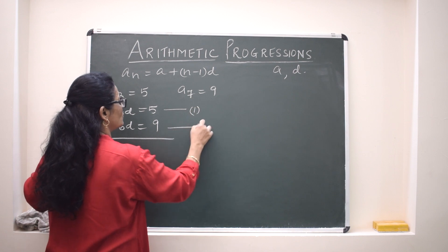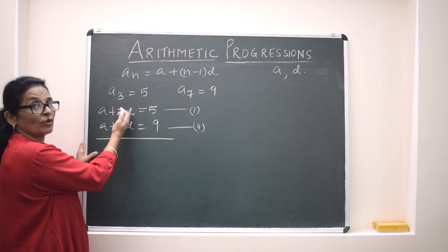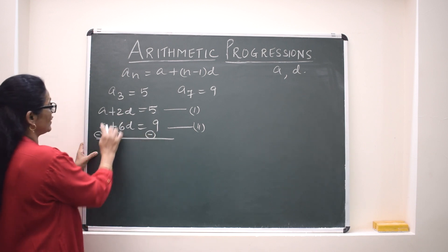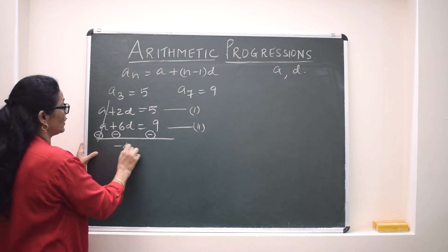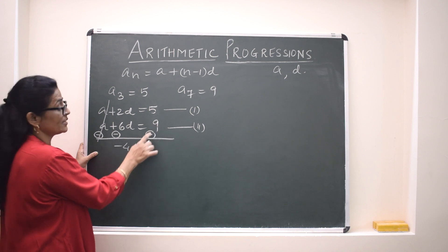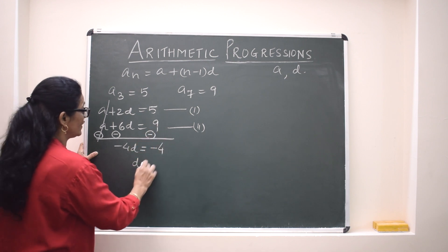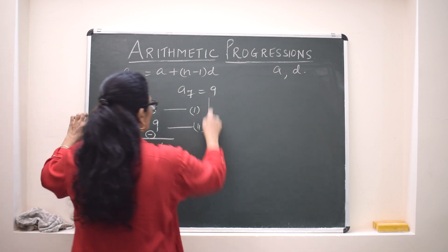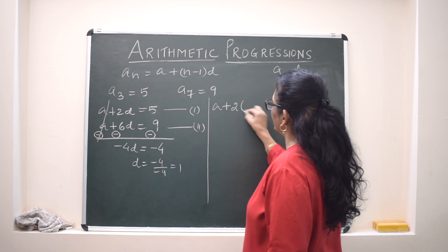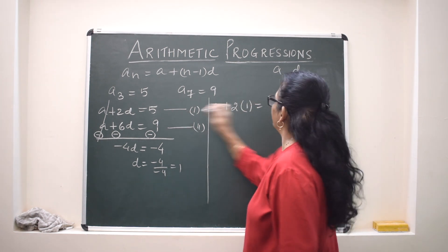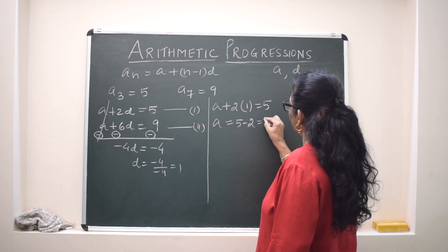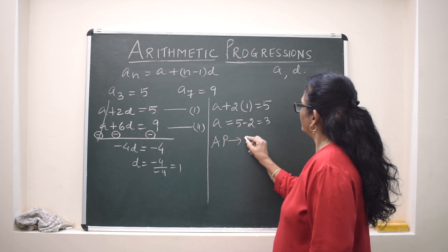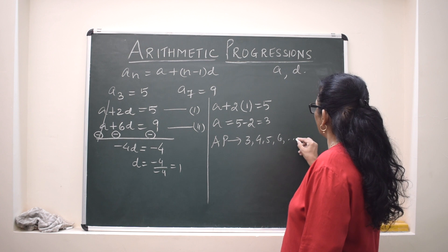Subtracting the second equation from the first: A − A cancels, and 2D − 6D = −4D = 5 − 9 = −4, giving D = 1. Substituting D = 1 into the first equation: A + 2(1) = 5, so A = 3. The AP is therefore 3, 4, 5, 6, and so on.